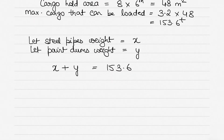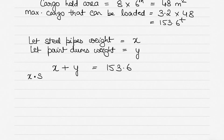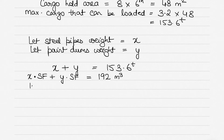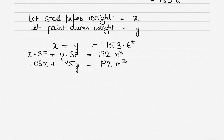We also have the storage factor of each cargo. If x is the weight of steel pipes, then x × 1.06 gives the volume occupied by steel pipes. Similarly, y × 1.85 gives the volume occupied by paint drums. The sum of these volumes must equal the total cargo hold volume of 192 cubic meters. So equation two is: 1.06x + 1.85y = 192 cubic meters.